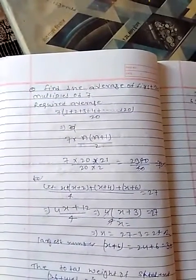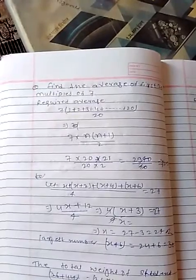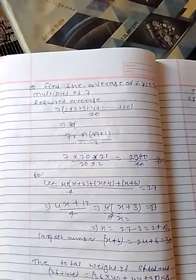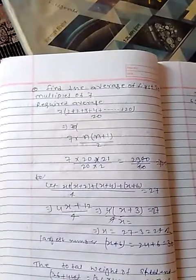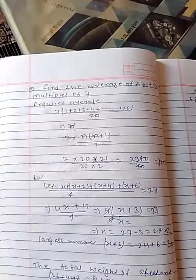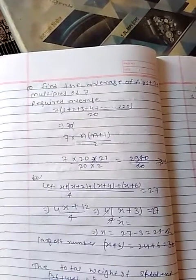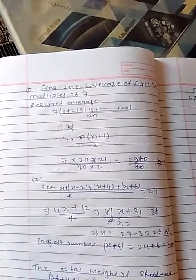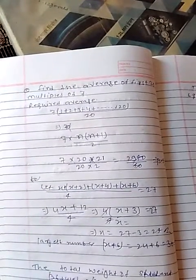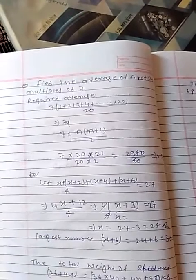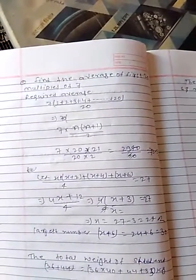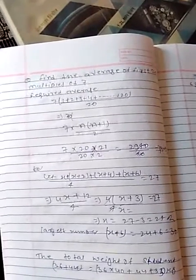To find the average of the first 20 multiples of 7, the required average is 7 times the sum of 1 plus 2 plus 3 up to 20, divided by 20. This equals 7 times n times n plus 1 divided by 2, which is 7 times 20 times 21 divided by 40, equals 2940 divided by 40.